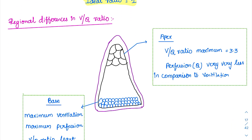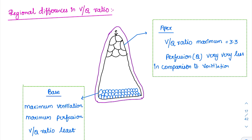When we talk about regional differences, we compare the apex with the base of the lung. Whenever a person is in upright posture, the lung comes down and the space in the apical region increases — the pleural space increases. When volume increases, Boyle's law states there is a decrease in pressure, creating negative pressure. With more negative pressure, more expansion happens. So at the apex, all the alveoli are expanded to large sizes — fewer alveoli but expanded larger due to increased negative pressure. Therefore, the V/Q ratio is very high at the apex.